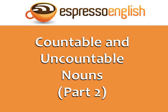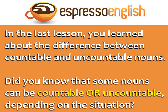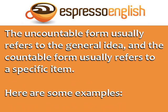Countable and uncountable nouns, part two, from Espresso English. In the last lesson you learned about the difference between countable and uncountable nouns. But did you know that some nouns can be countable or uncountable depending on the situation? For these words, the uncountable form usually refers to the general idea, and the countable form usually refers to a specific item or specific instance.